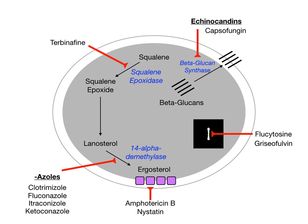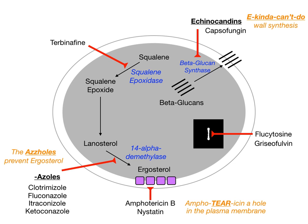This slide is the summary of how all these drugs work and on what part of the fungal cell they act. Now let's overlay some useful mnemonics. Starting with echinocandins: to remember that echinocandins inhibit cell wall synthesis, 'echinocandon' sounds like 'echinocandon' — you can't do cell wall synthesis if you give an echinocandin. That's how to remember that echinocandins prevent cell wall synthesis.